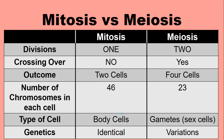Let's summarize the differences between mitosis and meiosis — you should pause and copy this down. Mitosis has one division; meiosis has two. Crossing over does not happen in mitosis, but does in meiosis. Mitosis results in two cells; meiosis results in four. In humans, mitosis cells have 46 chromosomes; meiosis cells have 23. Mitosis is for body cells (somatic cells); meiosis is for gametes or sex cells. In mitosis, daughter cells are identical to the parent; in meiosis, there are genetic variations.